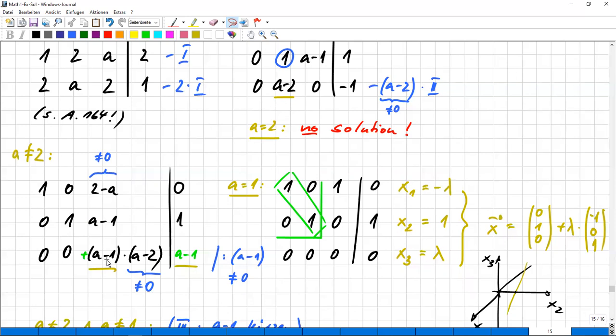It also gets zero. So then it would be zero, zero, zero, zero, and this is a clean zero row. So for this case, which I now denote here, A equals one, we even have a clean zero row here.